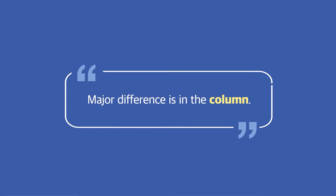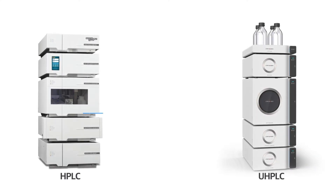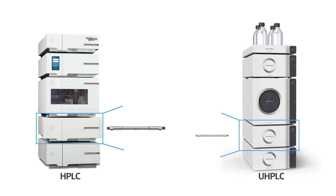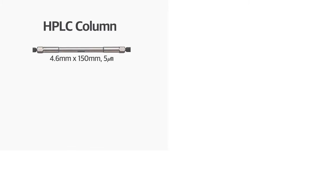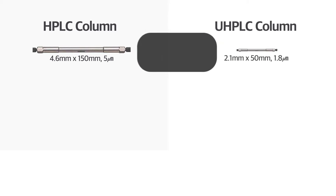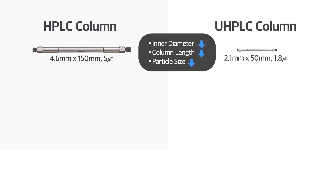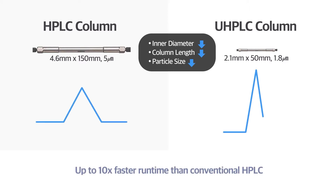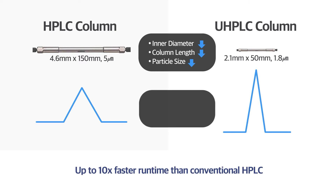The major difference is in the column. UHPLC utilizes shorter length and thinner inner diameter of column than HPLC, as well as the use of smaller particle size under 2 micrometers. This enriches higher resolution and sensitivity, along with enhanced productivity by reducing the analysis time.